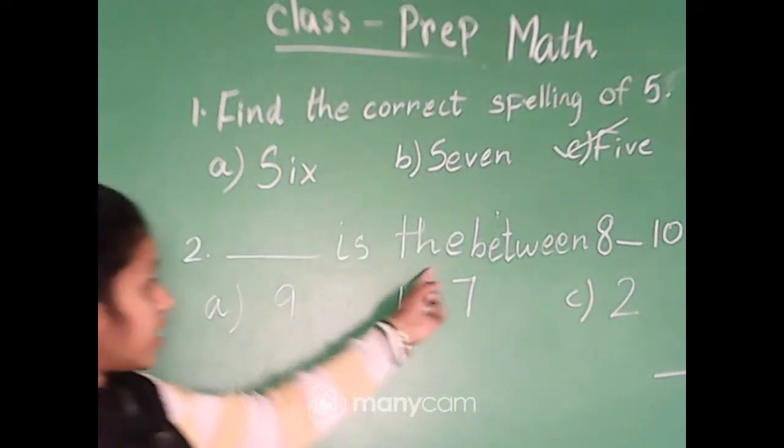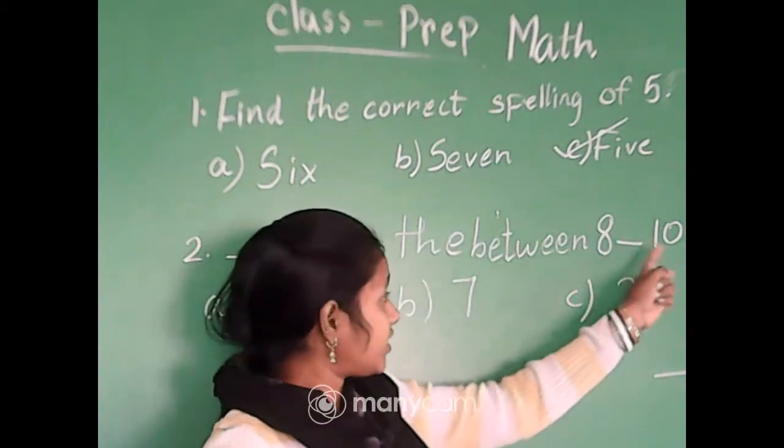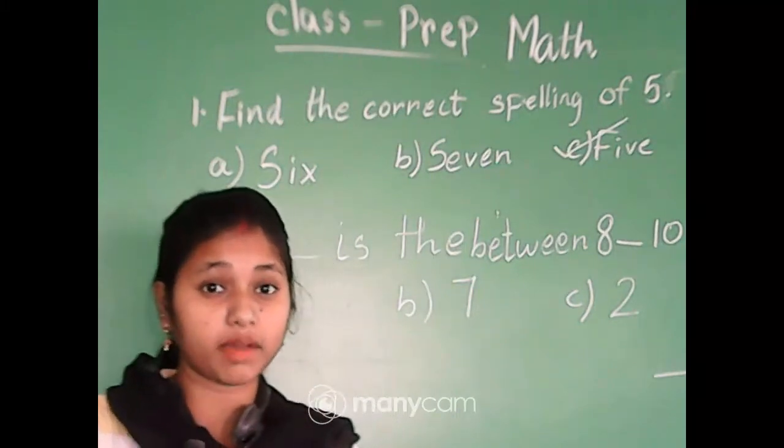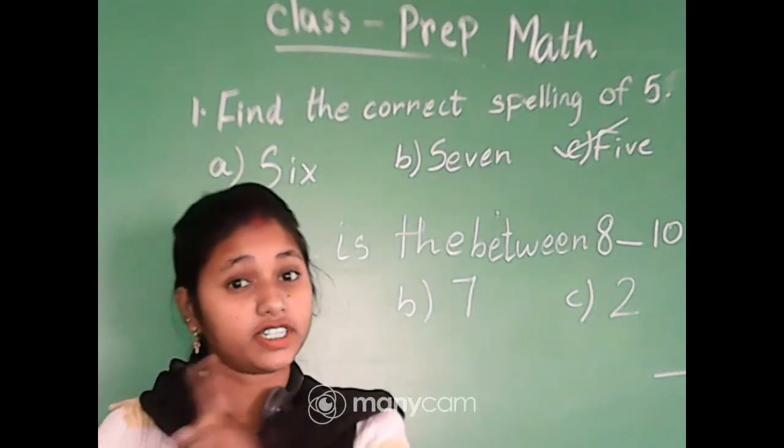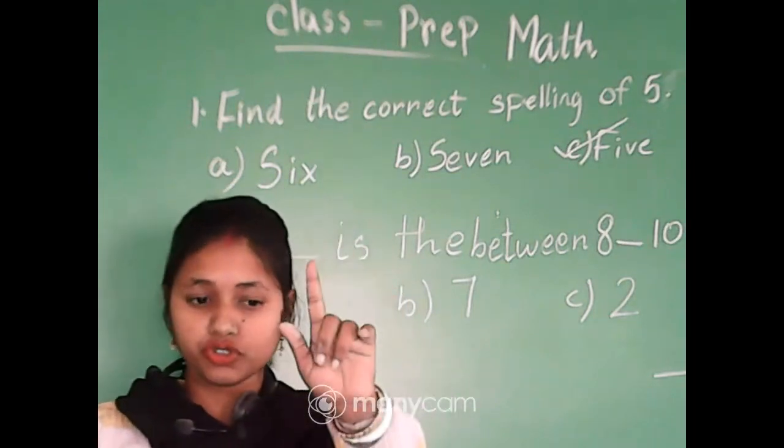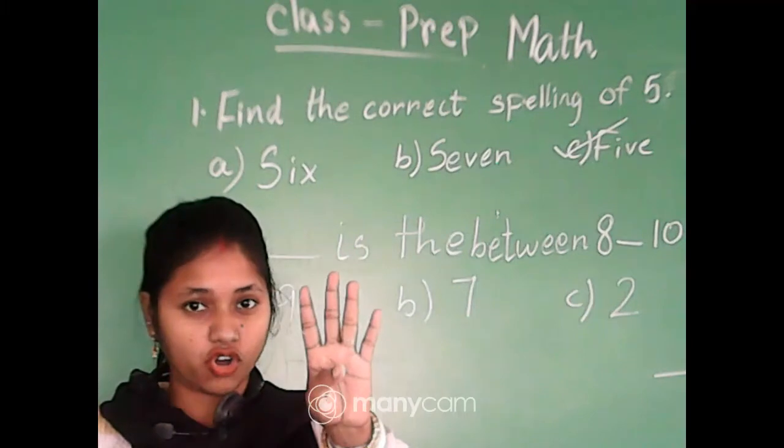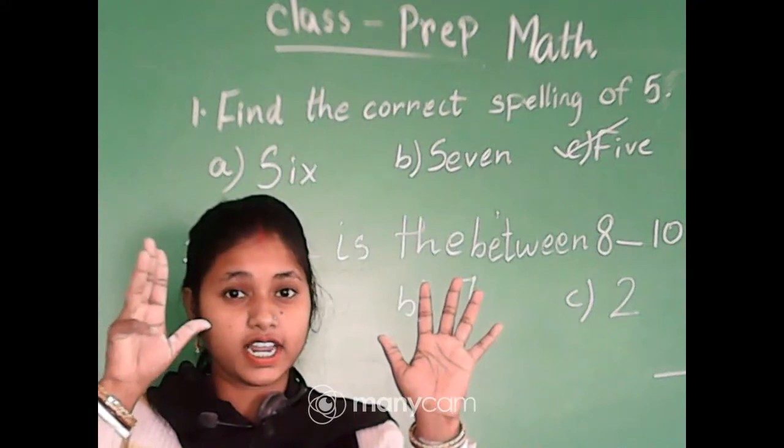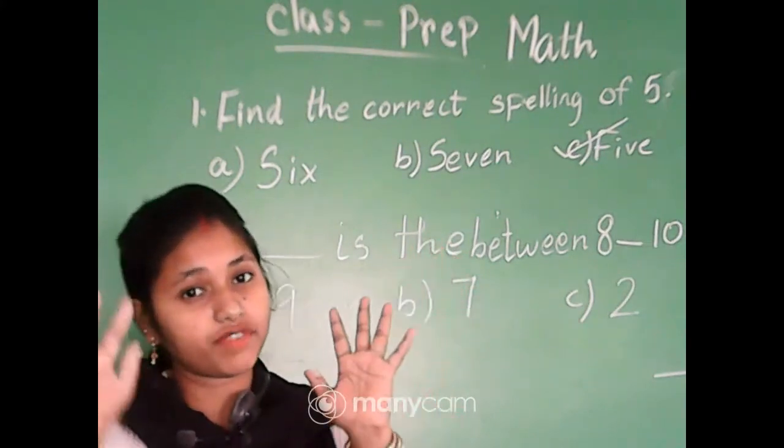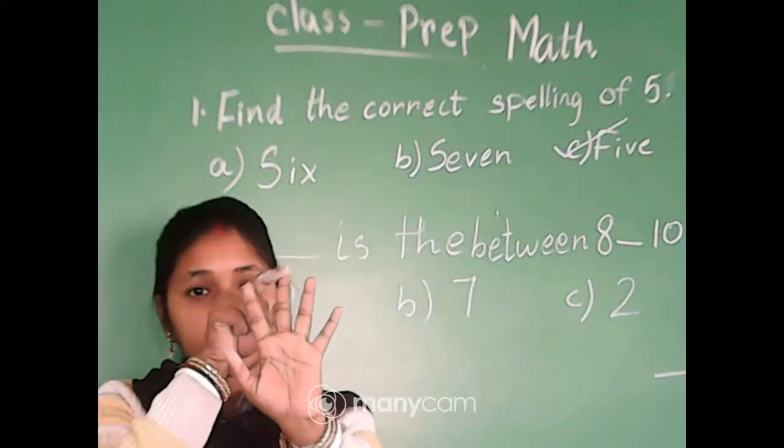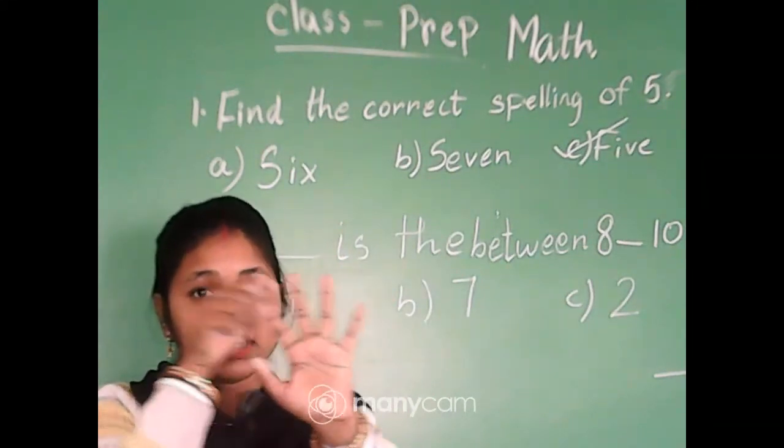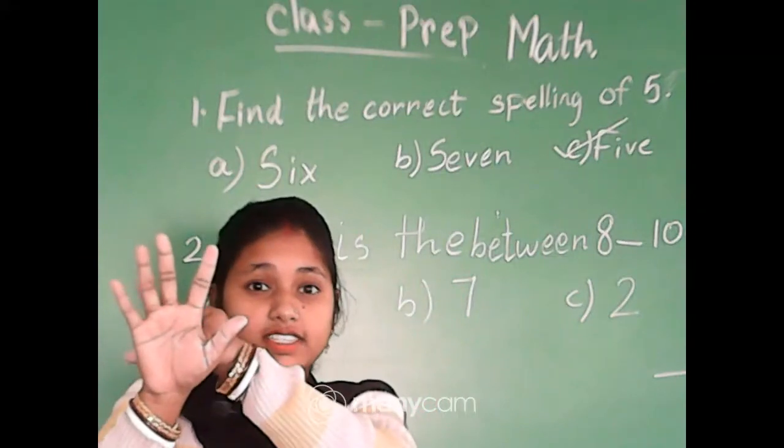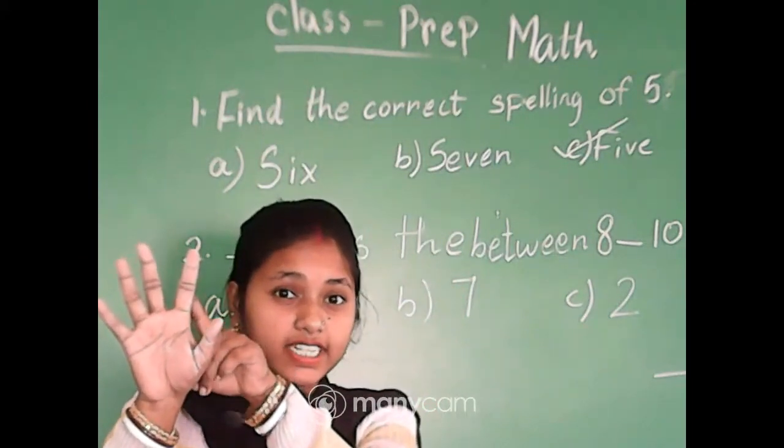Dash is the between 8 dash 10. We will count from 1 to 10 to find out the between number of 8 dash 10. 1, 2, 3, 4, 5, 6, 7, 8, 9, 10. Again we will count: 1, 2, 3, 4, 5, 6, 7, 8, 9, 10. 6, 7, 8, 9, 10.